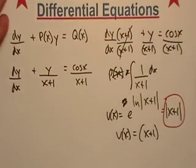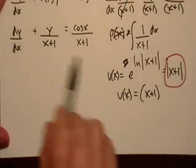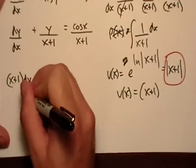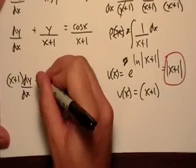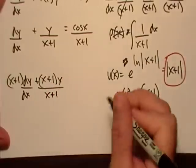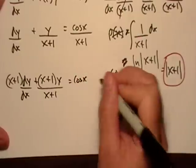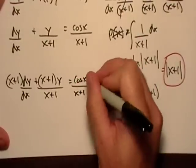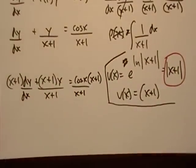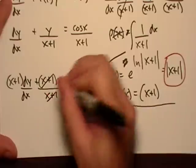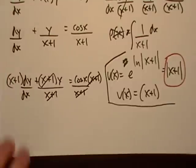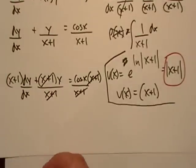So now we're just going to multiply everything through by x plus one. So x plus one dy/dx plus x plus one times y, which is divided by x plus one, is equal to cosine x times x plus one over x plus one. This is good because this will cancel out, this will cancel out. So I like it.